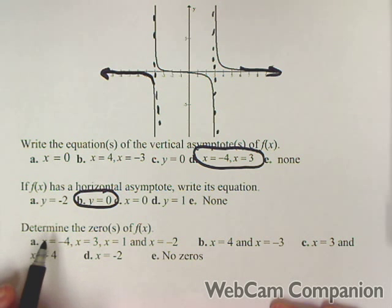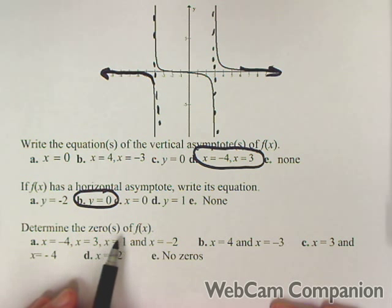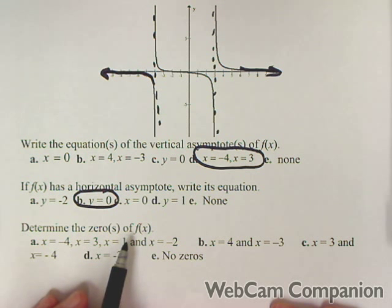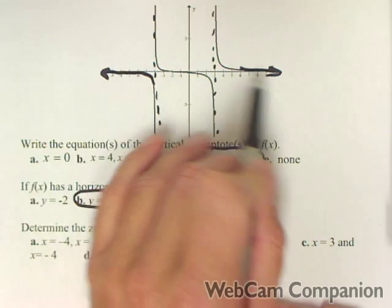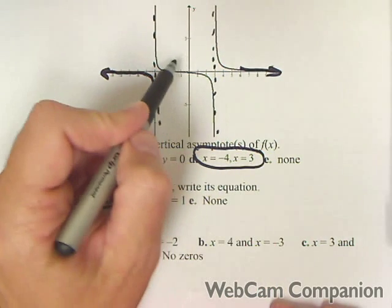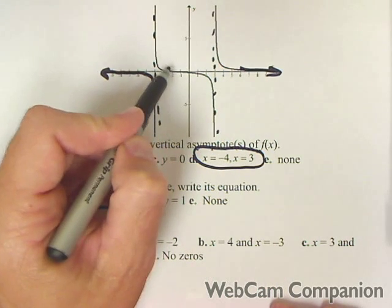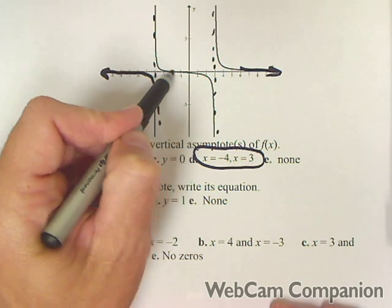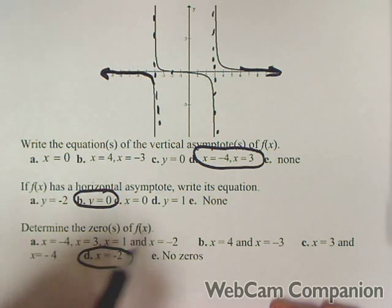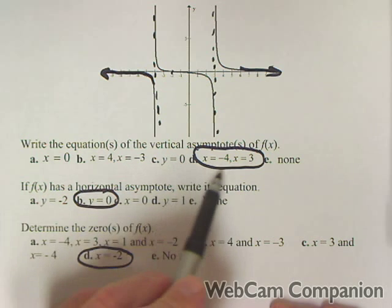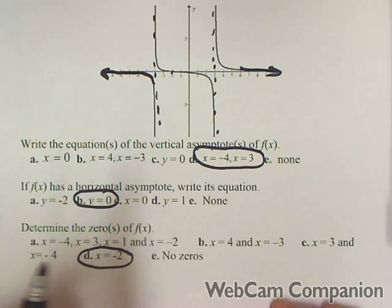Next, we want to determine the zeros of this rational function. It doesn't hit the x-axis at its asymptotes. The only place it looks like it hits is right here at negative two, so that's the only zero. Those other values are not zeros — they're asymptotes.